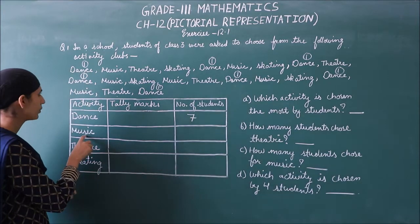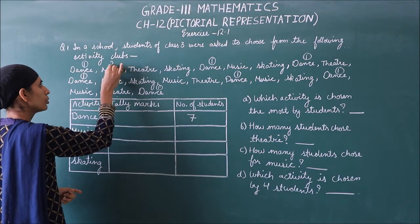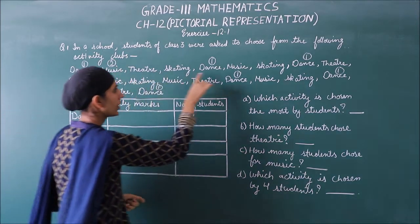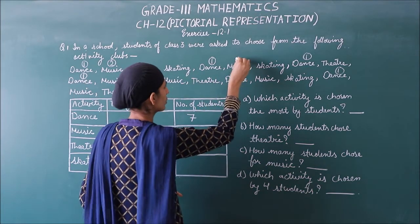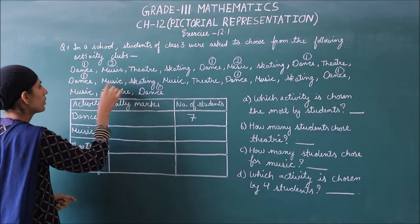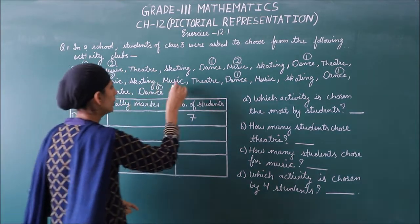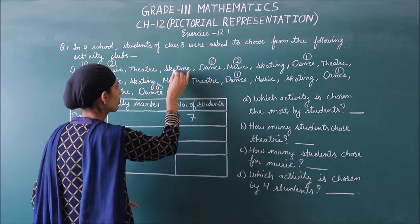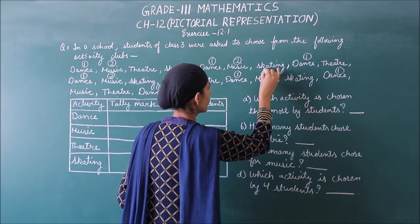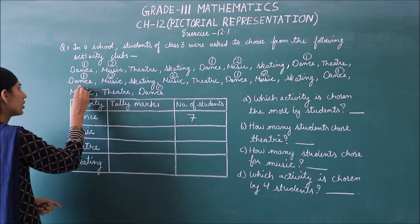Next we have music, so we give music number 2. Music entries are here — next music, then music again, and so on. In this way you have to find where music is written in the data.